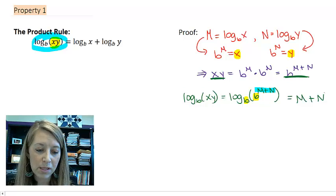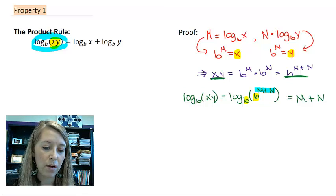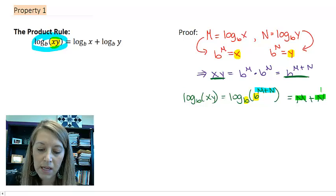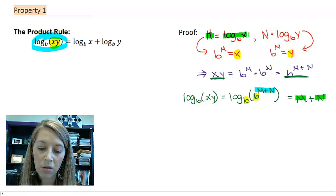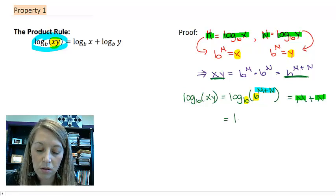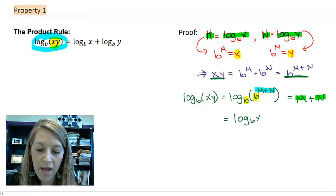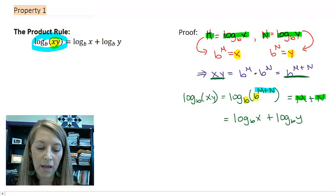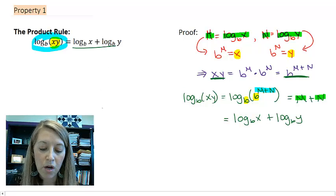Well, let me make one more substitution, and then I think we're there. If I take m plus n, that means I'm going to take log base b of x plus log base b of y. So that is equivalent to log base b of x plus log base b of y. And now we just have proved our property.